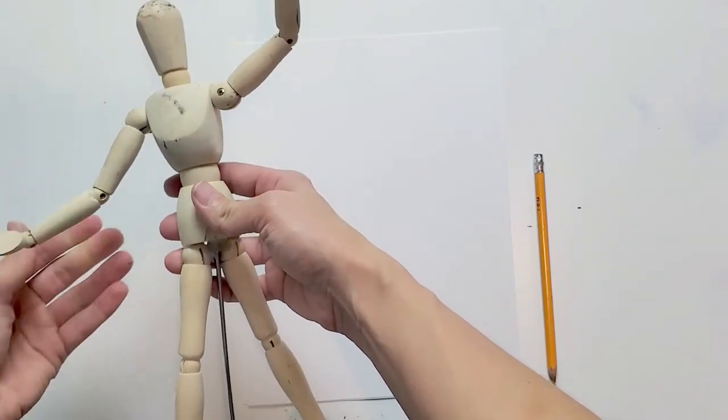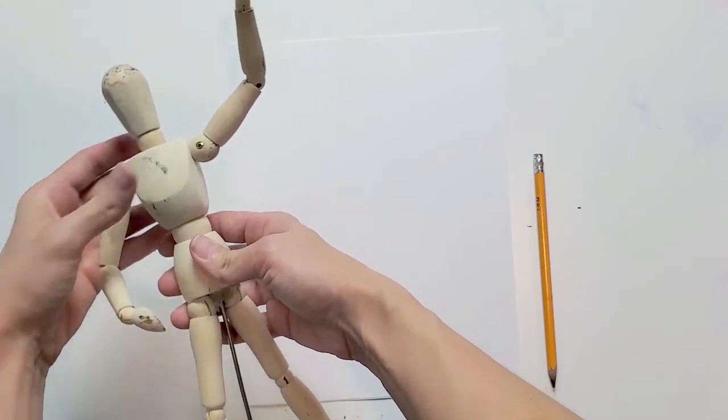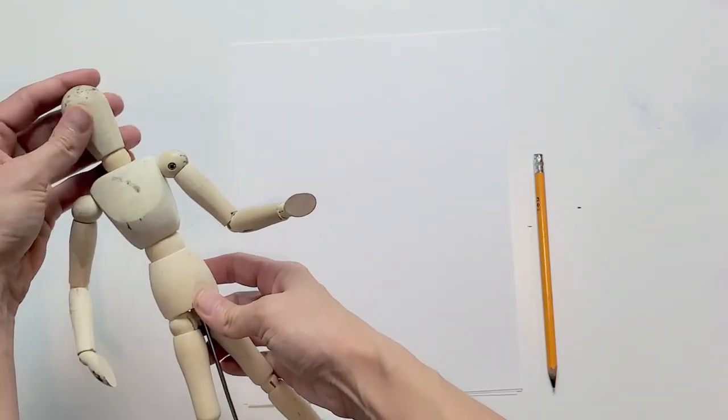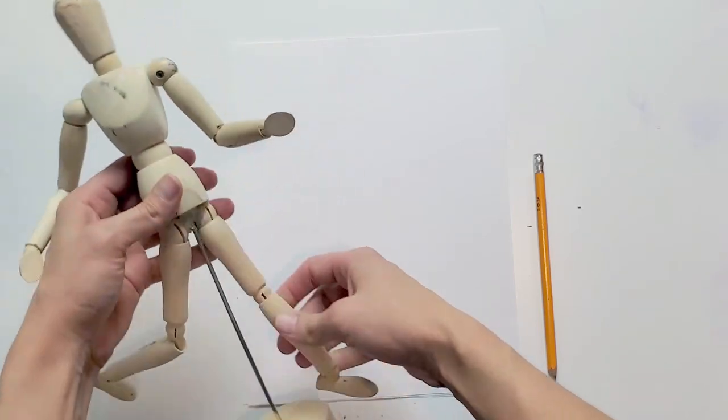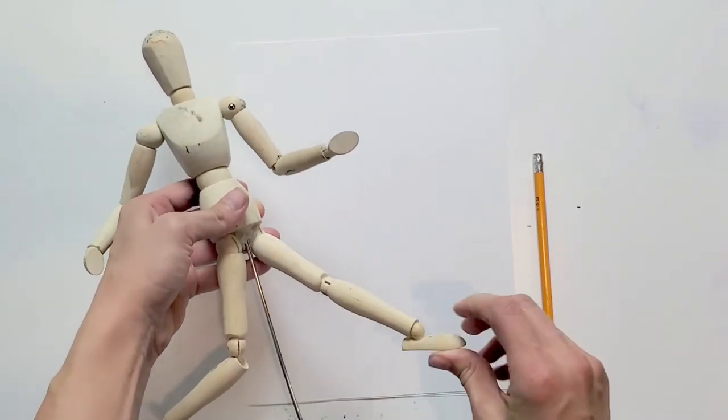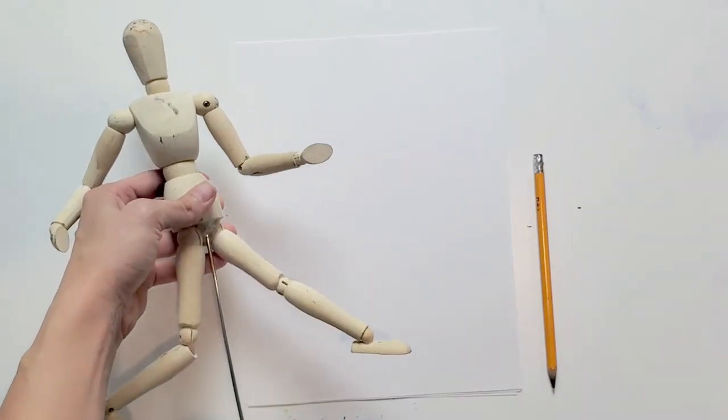Or if it's a soccer player, maybe you're moving or adjusting the arms and the legs to suggest that this mannequin is about to kick the ball.